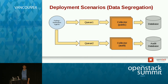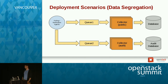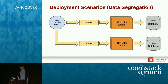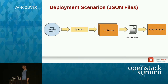The data segregation design is similar to Lambda. The use case is if you have two different data points — for example, CPU utilization would go to the public data store, while more sensitive data like audit data would go to an audit database. You'd have two different APIs controlling access to these databases to meet the required access control. Ceilometer also allows you to write JSON files, and big data tools like Apache Spark can consume those JSON files for data processing.